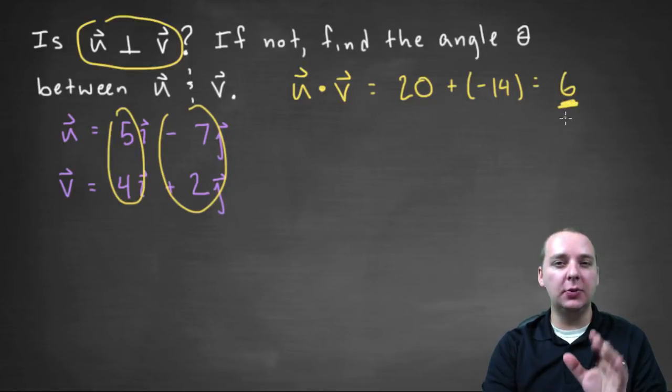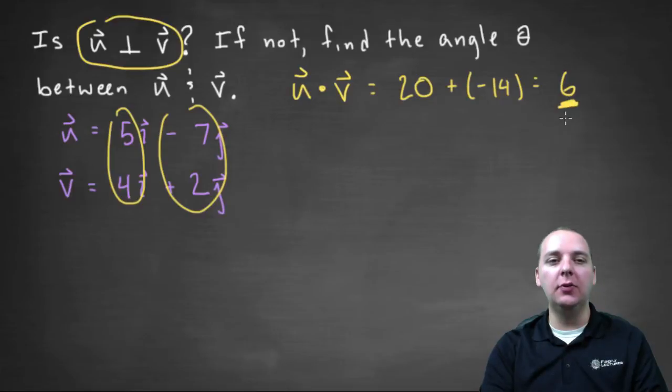Now one thing I want to stress, which is very very important to remember, when you take the dot product of two vectors, your answer is a scalar. Notice we did not say twenty i minus fourteen j or anything like that. The dot product doesn't have i's and j's in it. You're just taking the five and the four and the negative seven and the two and getting a scalar of six.